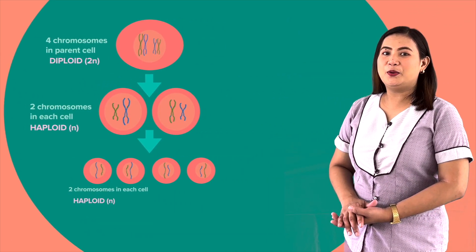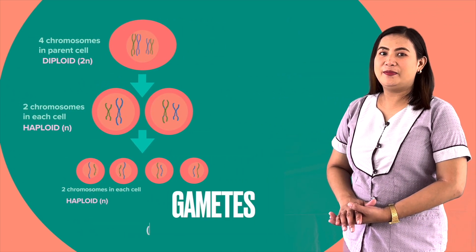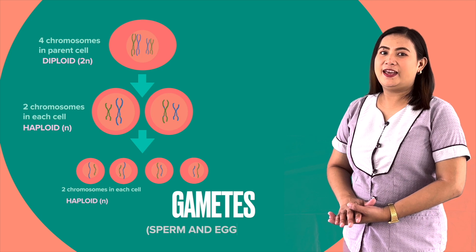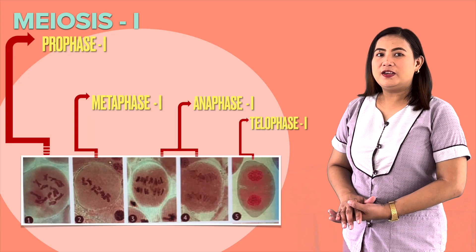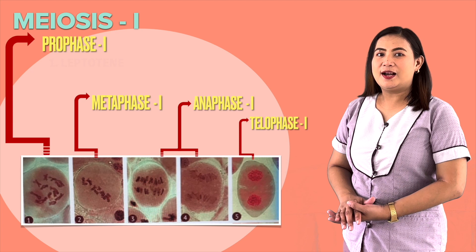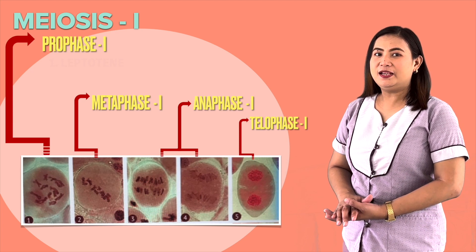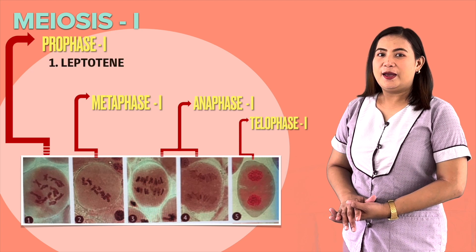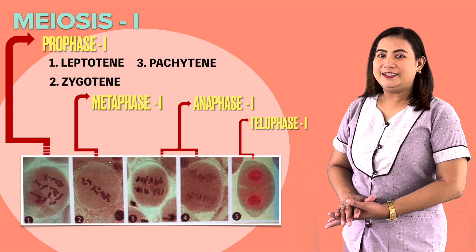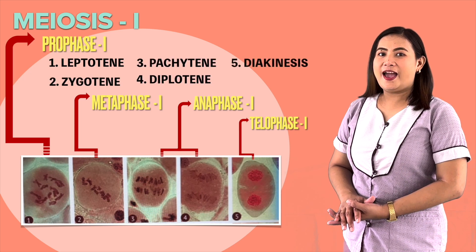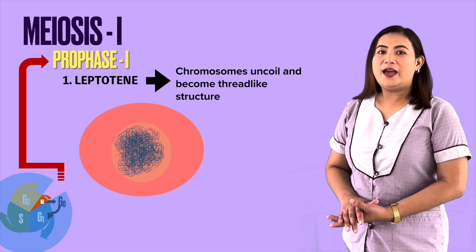The cells produced are known as sex cells or gametes — the sperm and egg cell. Meiosis 1 is subdivided into five stages: leptotene, zygotene, pachytene, diplotene, and diakinesis.